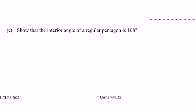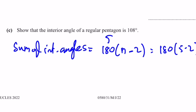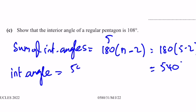Part C: Show that the interior angle of a regular pentagon is 108°. The pentagon has 5 sides. Using the sum of interior angles formula: sum = 180 × (n − 2) = 180 × (5 − 2) = 180 × 3 = 540°. Each interior angle = 540 ÷ 5 = 108°.